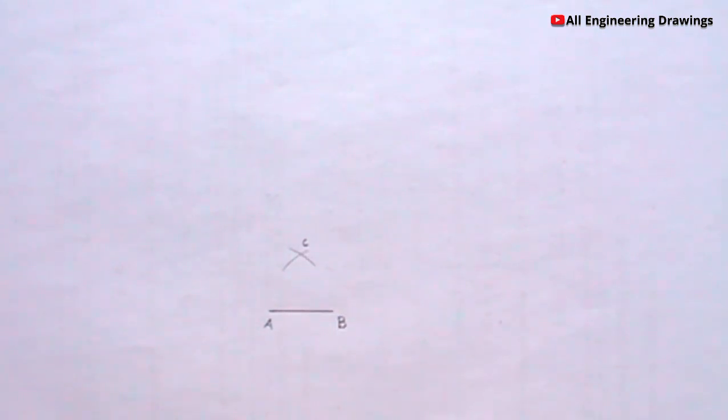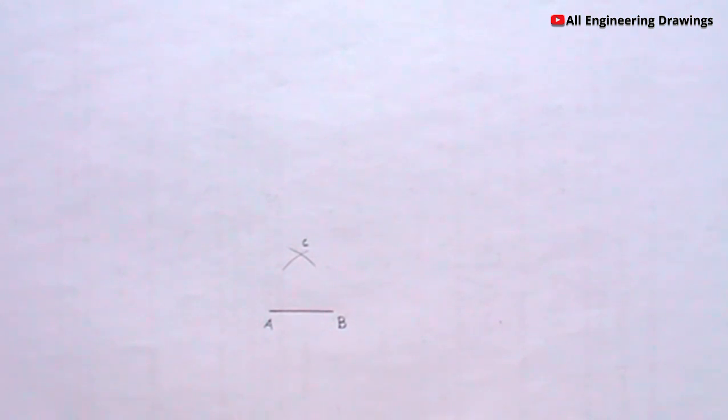Now just draw a line from the point where the arcs intersect to point A and point B, that is the ends of the horizontal line you drew.